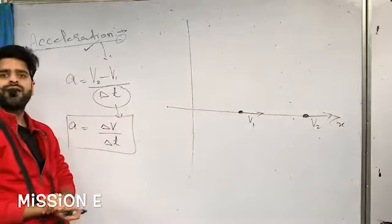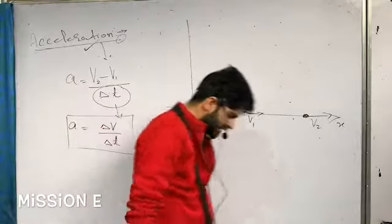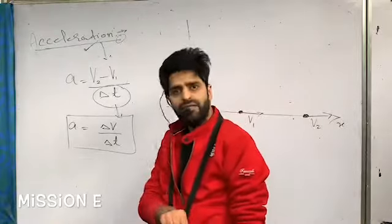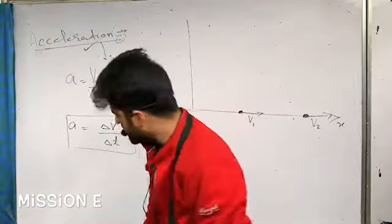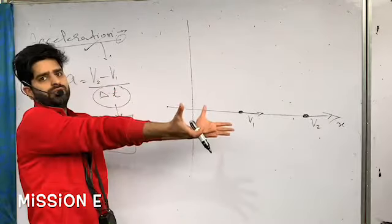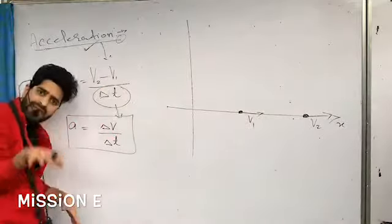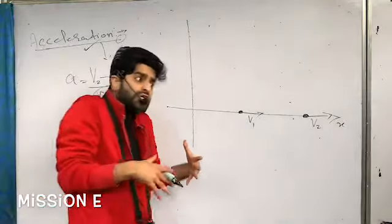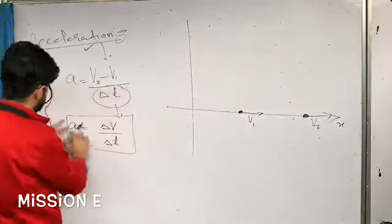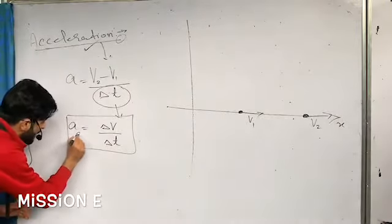Acceleration is the change in velocity divided by the time interval in which the change in velocity takes place. This form of the equation is called average acceleration, because it involves a finite change in velocity and a finite time interval.